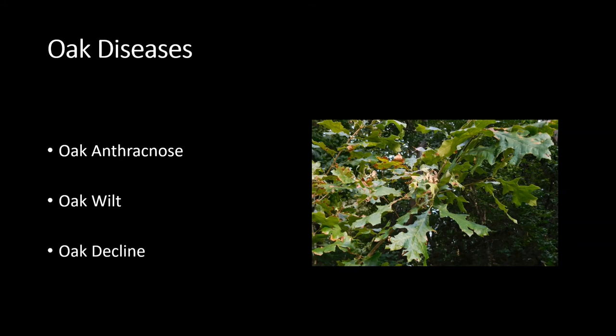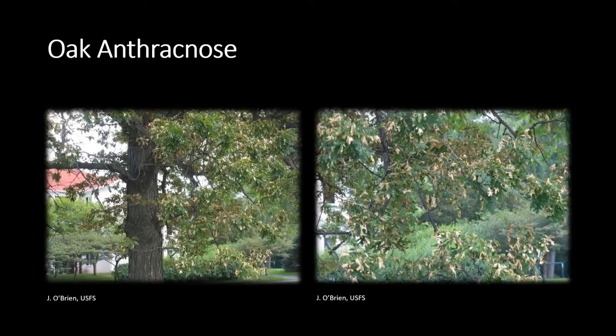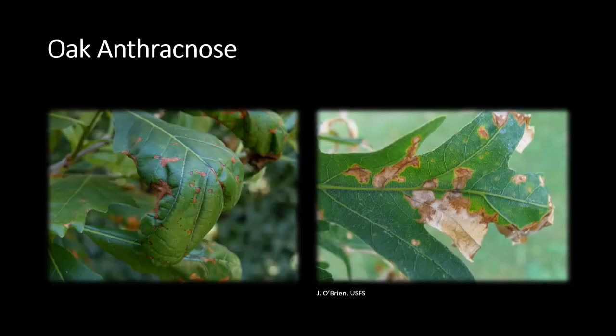Two diseases we will encounter today include anthracnose and oak wilt. We also look at general oak decline and symptoms closely associated with oak wilt. Anthracnose is a fungal pathogen that affects the leaves. One of the distinct symptoms of this disease is that it starts in the lower portion of the crown. The leaf examples here are great indicators for anthracnose, and another indicator is leaf curling as depicted on the left. Anthracnose develops in the spring and early summer, and leaf tissue will appear lighter in color as the season progresses.